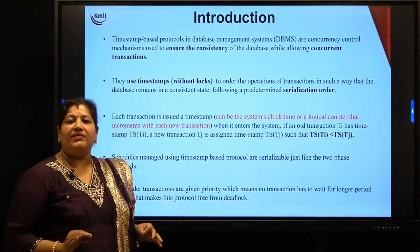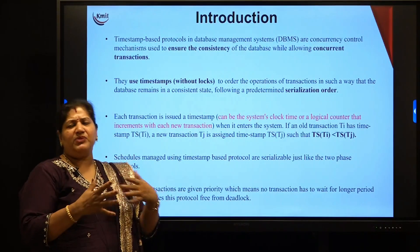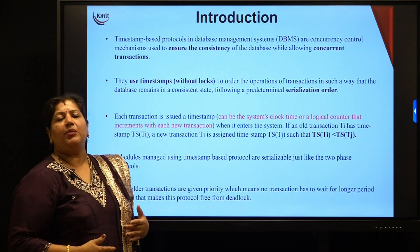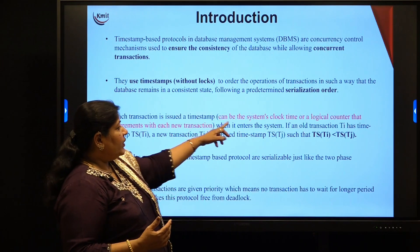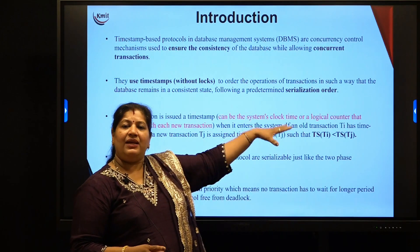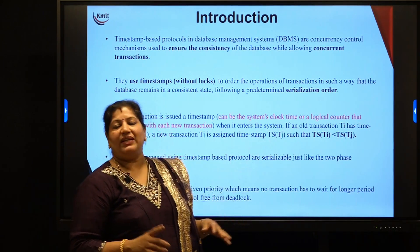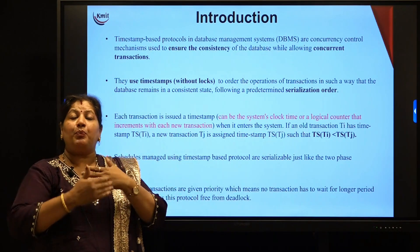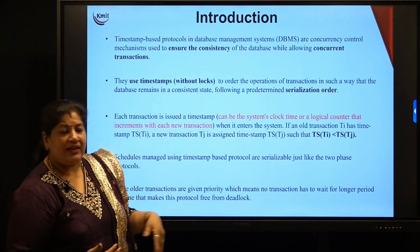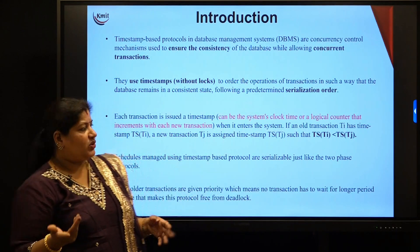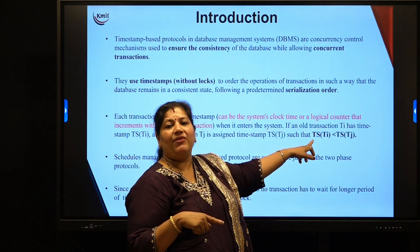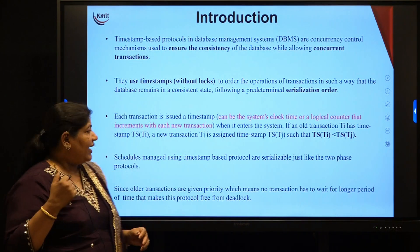How it works: each transaction is issued a timestamp. A timestamp is generally the system's clock, or it can be a logical counter that is incremented with every new transaction. Whenever a transaction enters the system, it is given a timestamp. Assume transaction Ti is allocated timestamp TS(Ti). Then a process Tj which enters later will have a higher timestamp, showing that it is a younger transaction. So TS(Ti) for an older transaction will have a timestamp less than the newer transaction Tj.